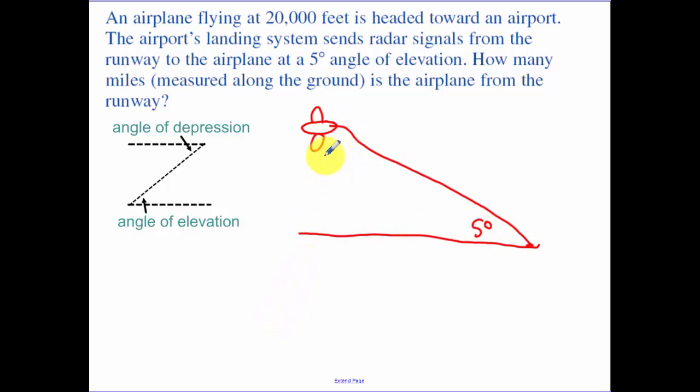Our airplane is flying at 20,000 feet. How many miles measured along the ground? I'm looking for X. So opposite over adjacent, that's tangent. Tangent of 5 is opposite over adjacent. I multiply both sides by X so I get X times the tangent of 5 equals 20,000.